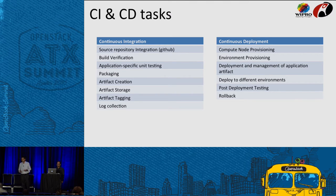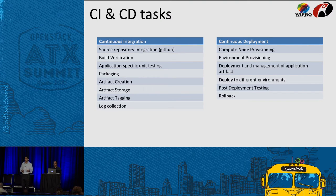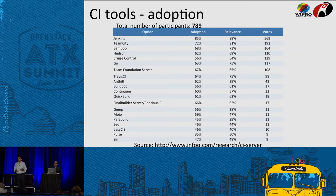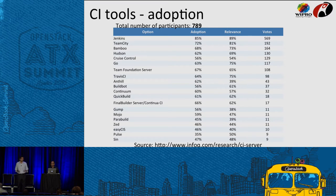From an integration standpoint, CI tasks are generally streamlined and we have multiple tools to manage them. On the deployment side, looking at the type of infrastructure each customer needs, the deployment process could change — that's the complexity we see today. We thought it's more interesting to leverage the deployment orchestration capabilities of Solum in OpenStack and see how we can marry the continuous integration of generic tools like Jenkins with Solum. When selecting a CI tool to integrate, we looked at a survey presented in InfoQ and chose Jenkins as one of the widely used tools with very good adoption and many available plugins.